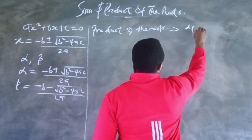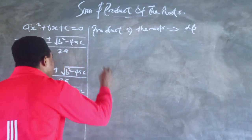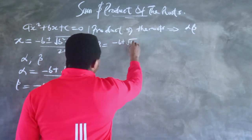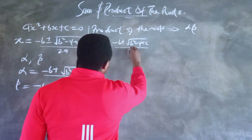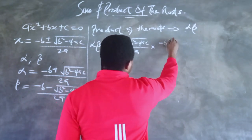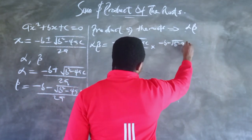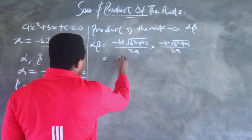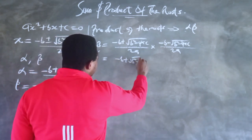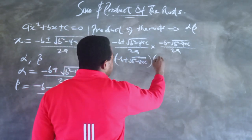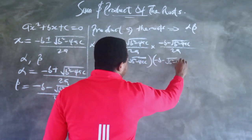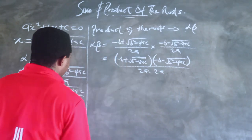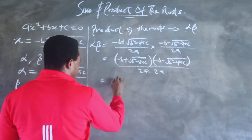Now let us move on to the product of the roots. The product of the roots means alpha times beta. So alpha × beta = [(-b + √(b² - 4ac)) / 2a] × [(-b - √(b² - 4ac)) / 2a]. We place both numerators in brackets over the denominator 2a × 2a = 4a².